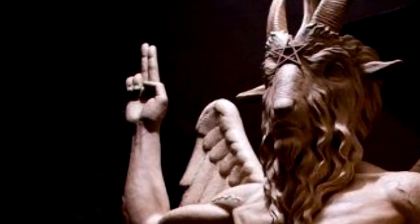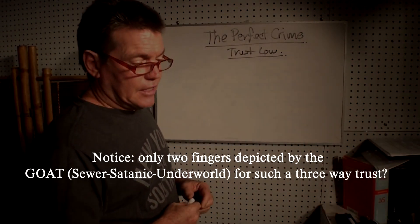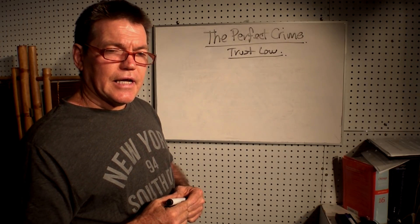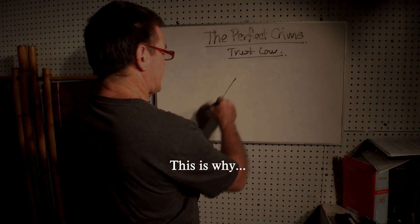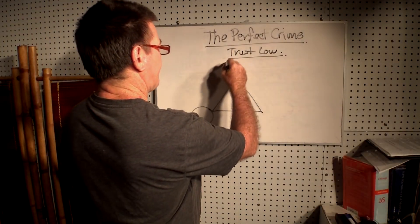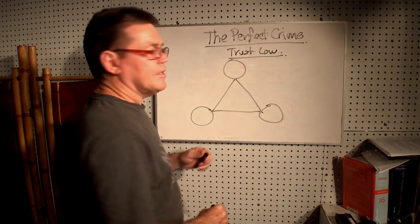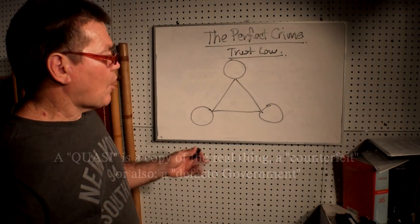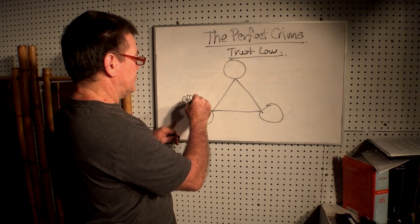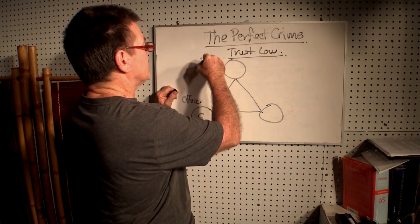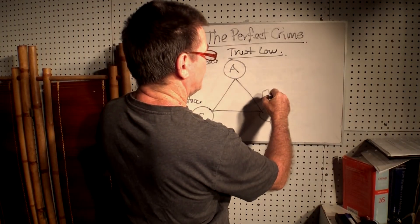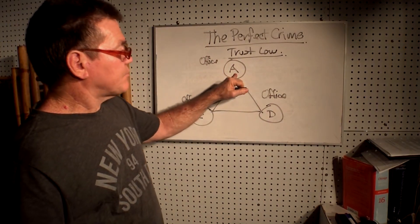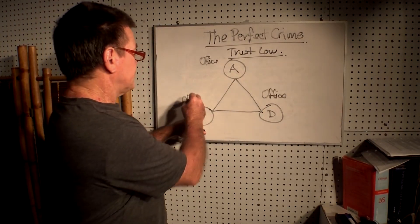But what the Corpus Juris did — what Justinian, Accursius, the Vatican, and the judiciary have done — is devise a quasi-trust. It looks much the same, but it is a quasi, which is a fictitious trust, a fiction trust. And it operates as the office of creditor, the office of administrator, and the office of debtor.